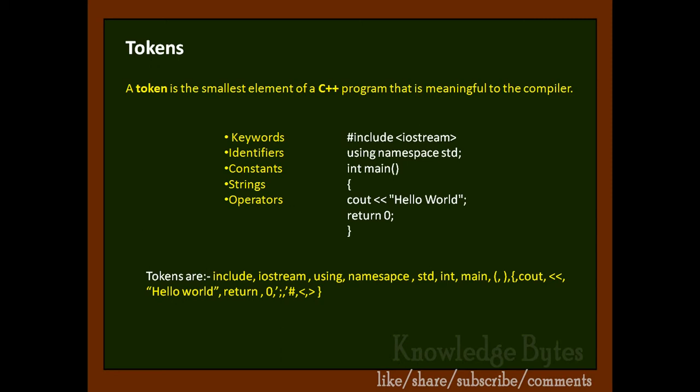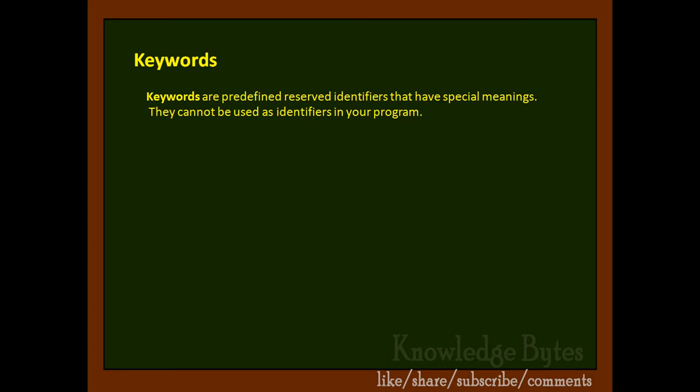Keywords are predefined reserved identifiers that have special meanings. Those are predefined words defined by the compiler with fixed meaning for C++. They cannot be used as identifiers in a program. Let's look into the details and cover all the keywords present in C++.